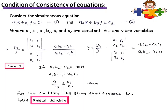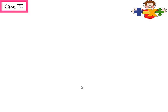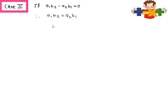Now the next case arises. In Case 1 the determinant was not equal to 0. Now Case 2 is that it becomes equal to 0. That is, a1·b2 - a2·b1 = 0. What will happen now? Shift the terms as before: a1·b2 = a2·b1.